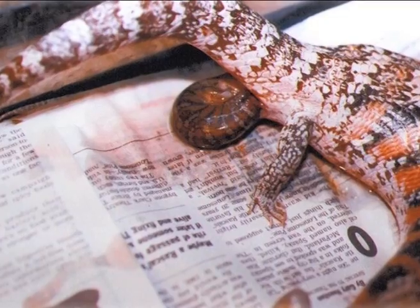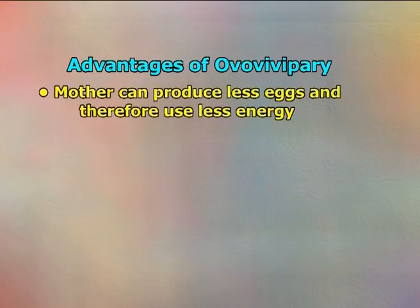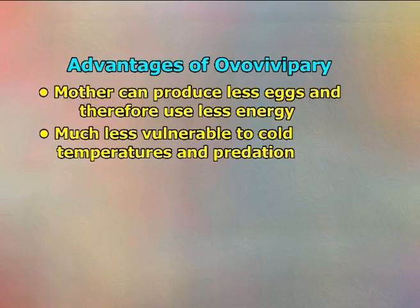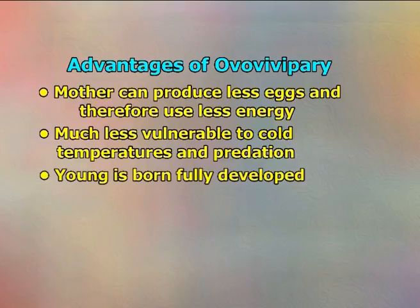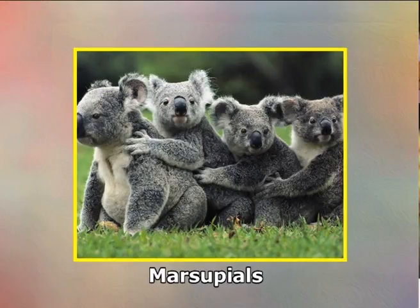Ovoviviparity: in ovoviviparous animals the eggs are fertilised internally and kept inside the female body until they hatch, so they are born alive. Advantages include the mother producing fewer eggs and using less energy, young being much less vulnerable to cold temperatures and predation, and young being born fully developed. Viviparity: in viviparous animals, fertilisation is internal and the eggs do not have a shell. The egg forms an embryo which develops inside the parent and gains nutrition from the parent, usually through the placenta.